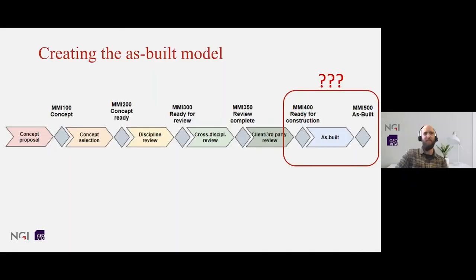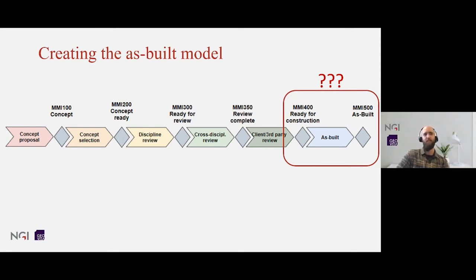Now we are at the end of the design phase or installation work is underway or already complete, and the client is requesting the as-built model of the ground improvement. One simple solution could be to take the MMI 400 ready-for-construction model, change it to MMI 500, give it a new date, and reissue to the client. But that would possibly not be entirely correct, because during the installation works it is highly likely that things have changed compared to the design model. So instead, maybe we can use and combine the data from the installation process with our data from the design process, reconstruct a new 3D model, and compare this new model against the design model.